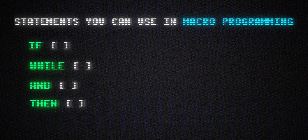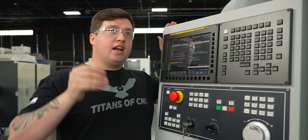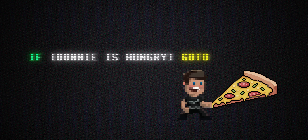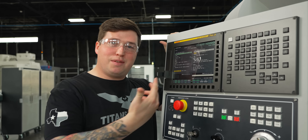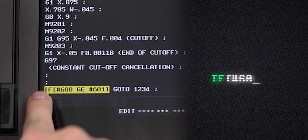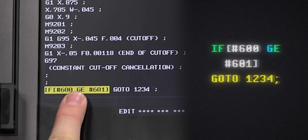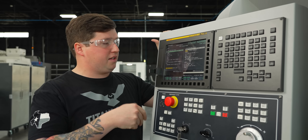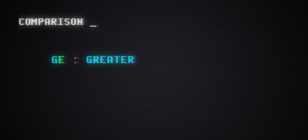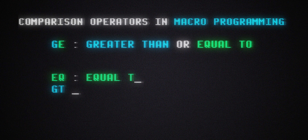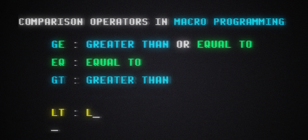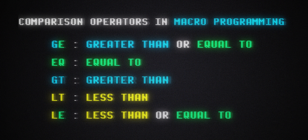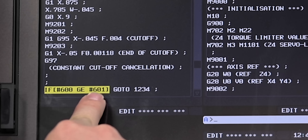I'm going to use an IF statement. There are multiple statements you can use in macro programming — you have IF, WHILE, AND, and THEN — but today we're just going to focus on IF. IF is kind of like saying: if I'm hungry, then go eat a pizza. In our program, we're going to say: IF #600 GE #601, GOTO 1234. GE means greater than or equal to. You also have EQ for equal to, GT for greater than, LT for less than, and LE for less than or equal to. All of these can be used in the set of conditions after the IF statement.